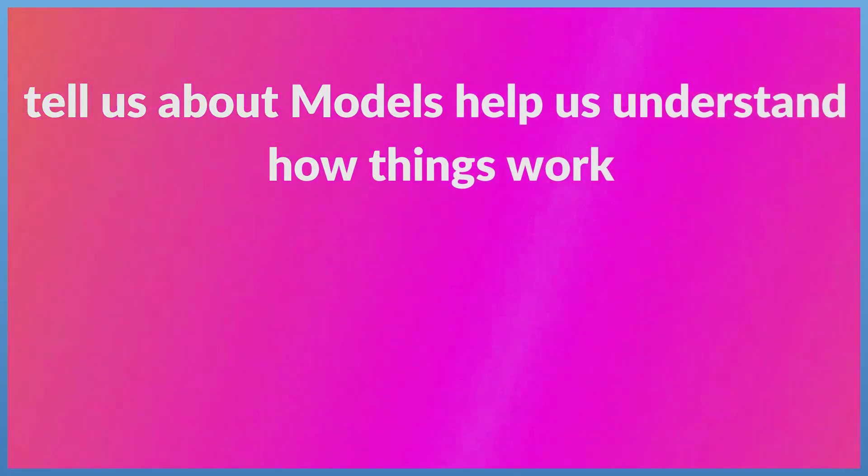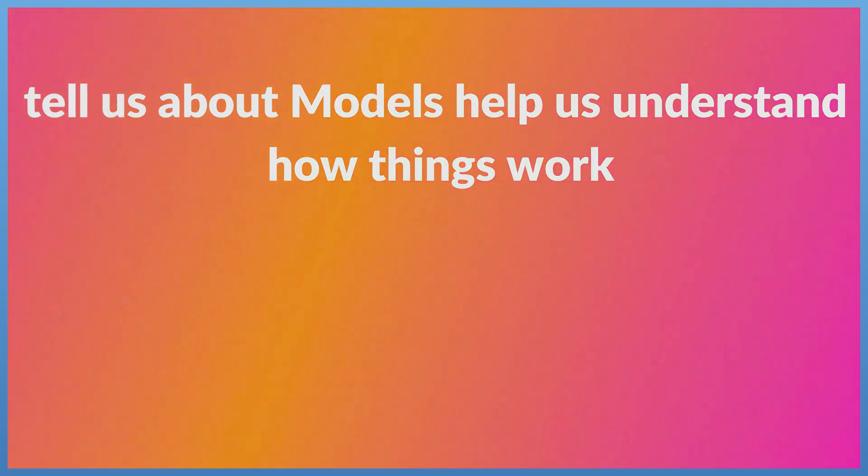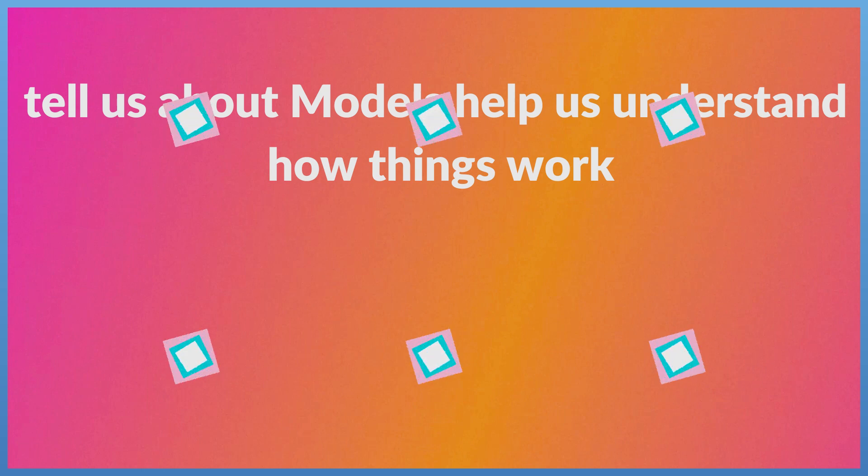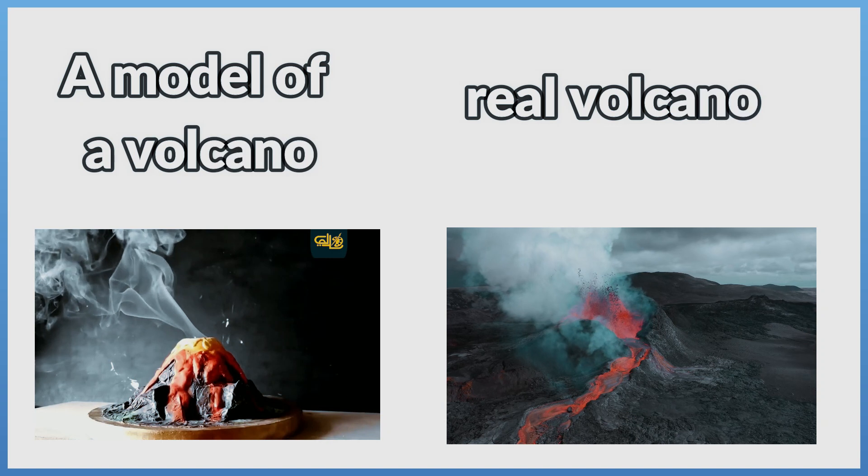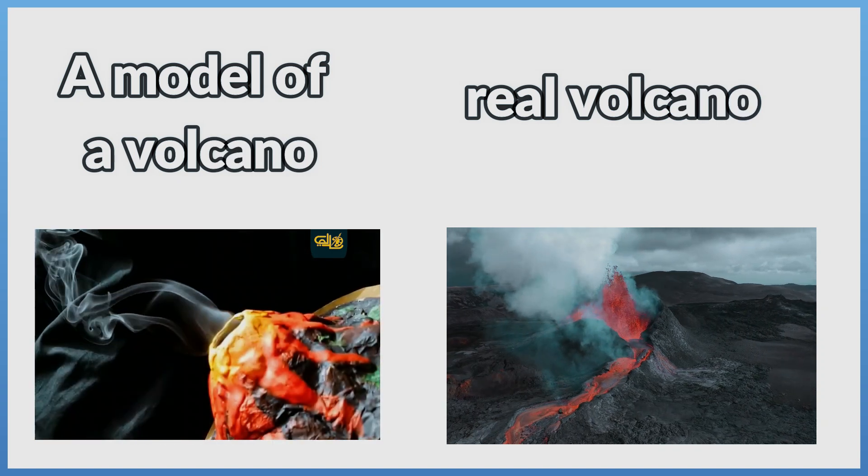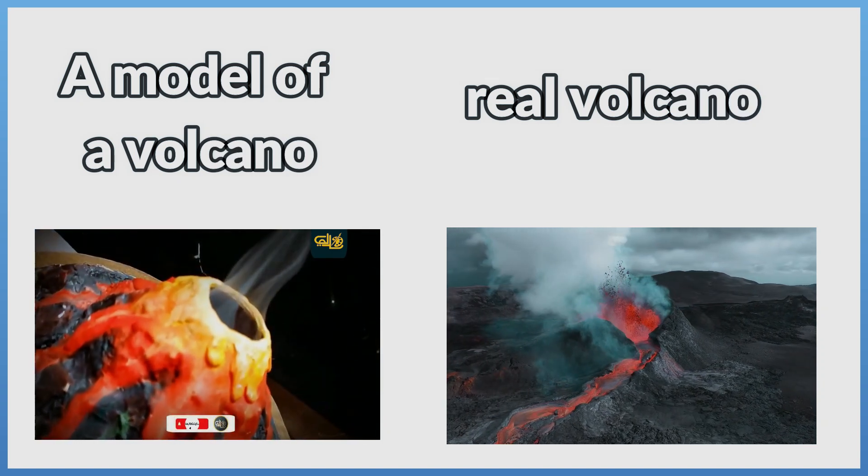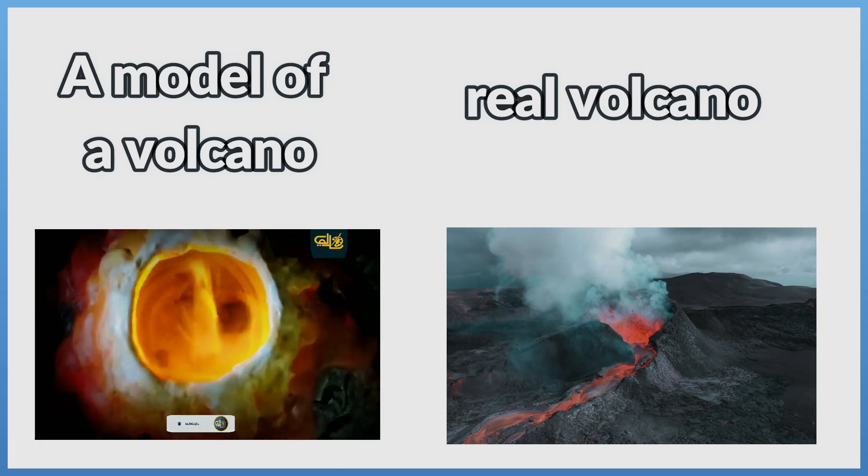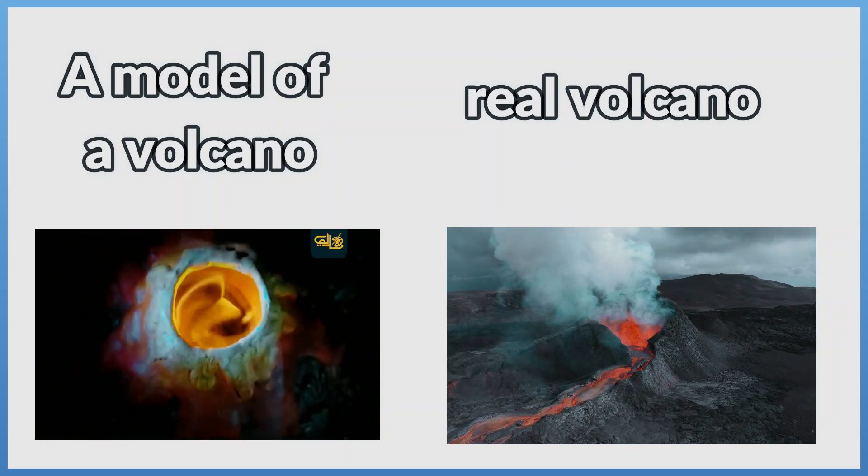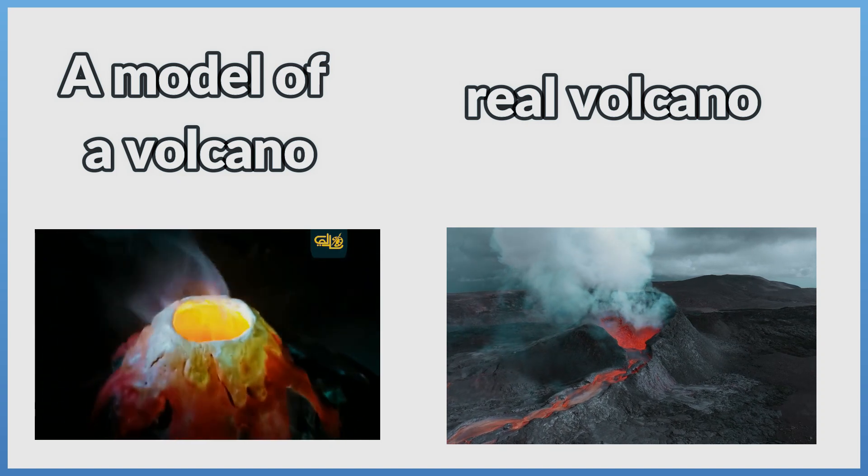Now let's talk about how models help us understand how things work. Example 1: A model of a volcano. A model of a volcano shows us the shape of a volcano and how the liquid comes out of a volcano during a real eruption.